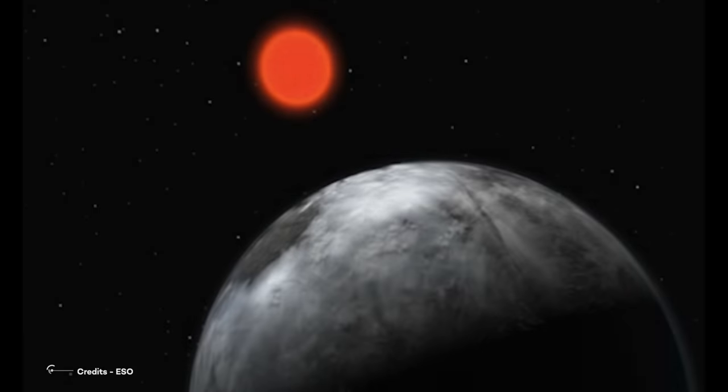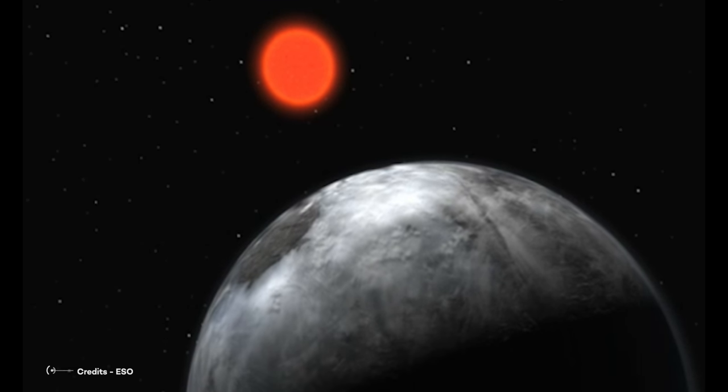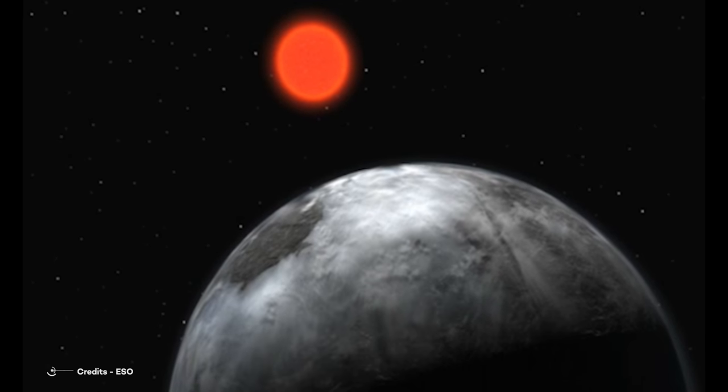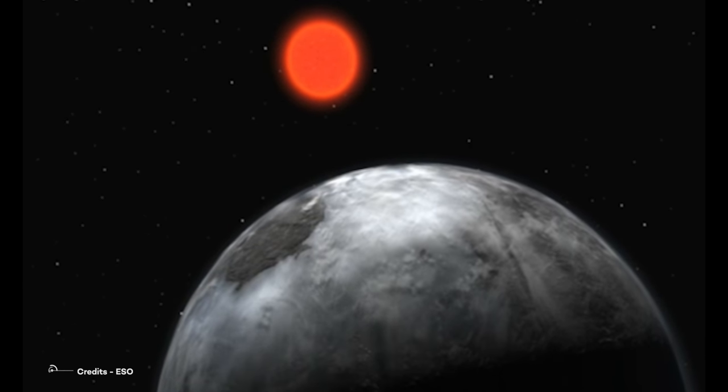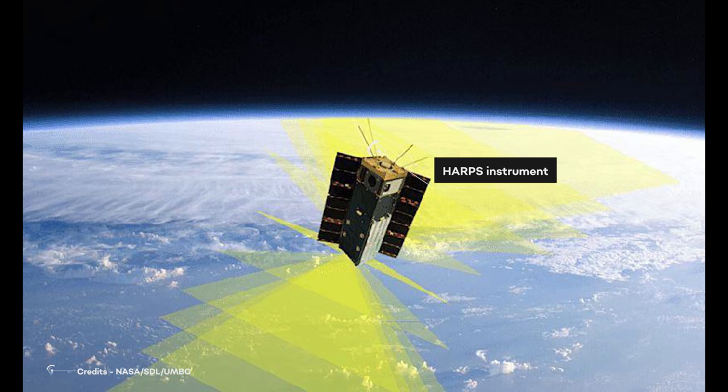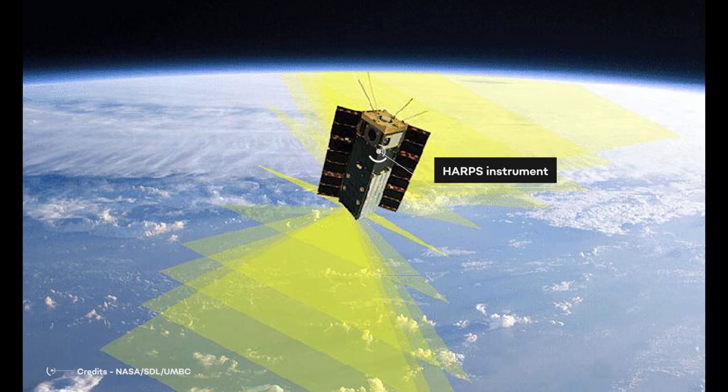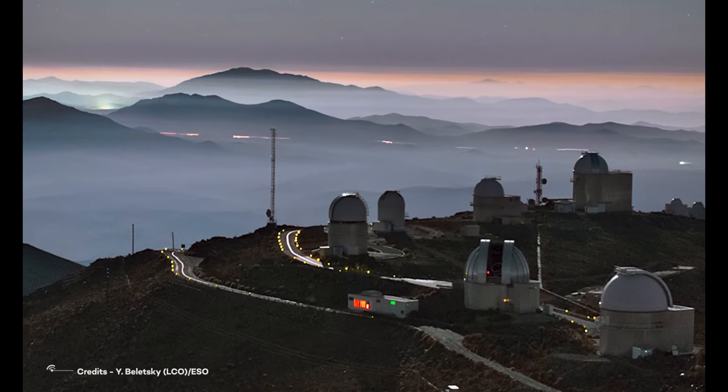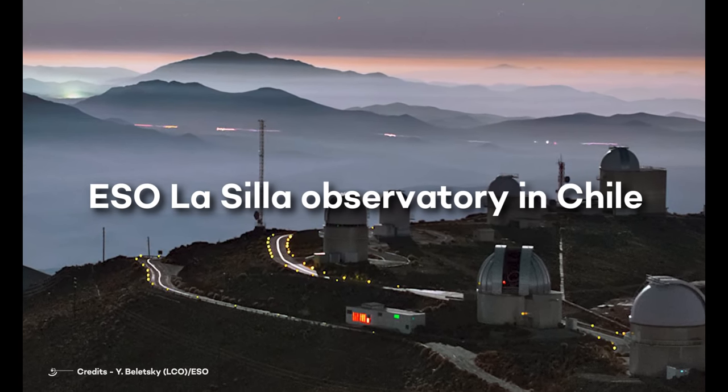On April 24, 2007, an exoplanet in the Libra constellation was discovered. The discovery was announced by a team of astronomers from the University of Geneva, Switzerland. At that time, the group was using the HARPS instrument, installed in 2002, on the 3.6-meter telescope of ESO La Silla Observatory in Chile.